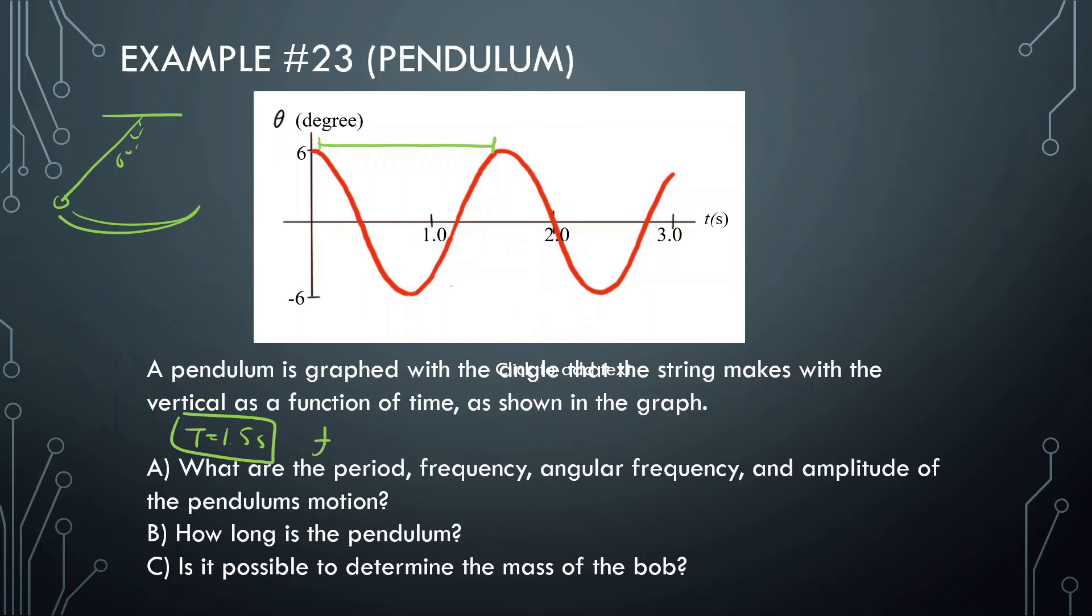The frequency, remember, that's the inverse of the period. So we're going to do 1 divided by 1.5, and we should get 0.67 hertz.